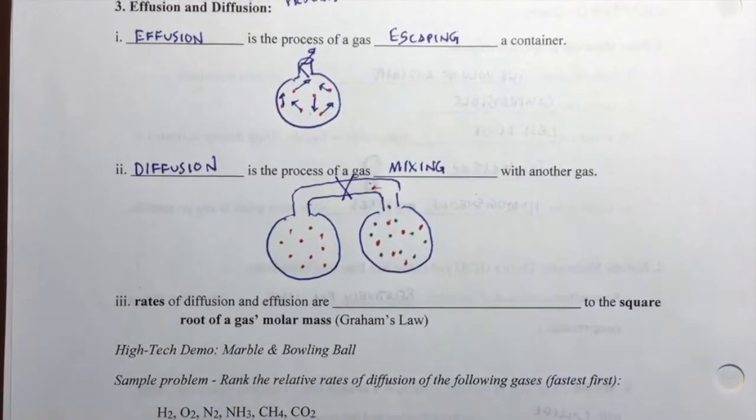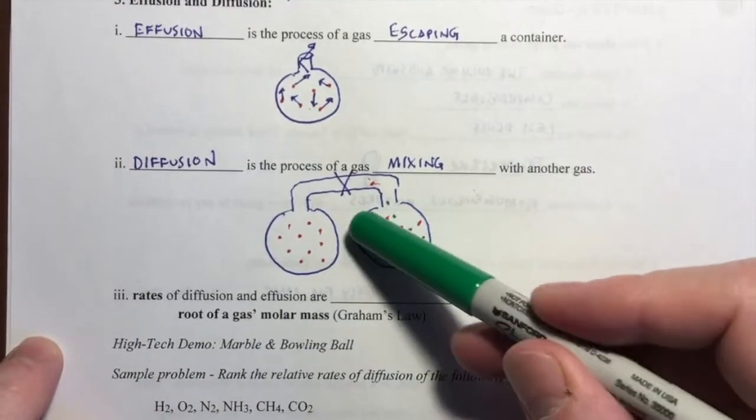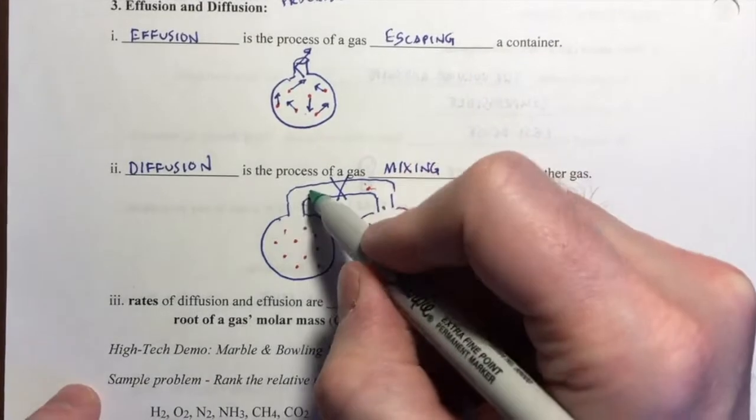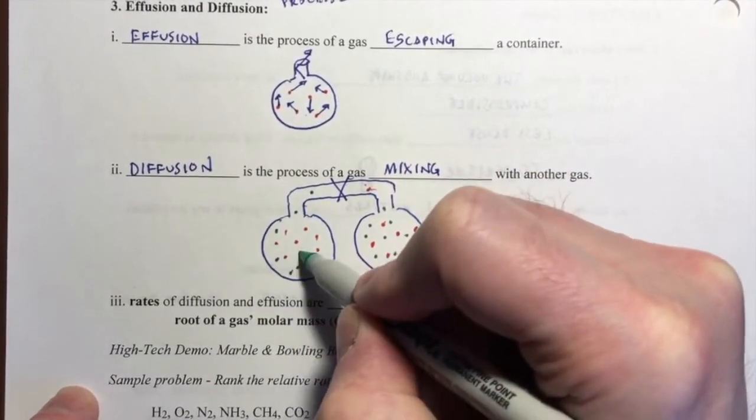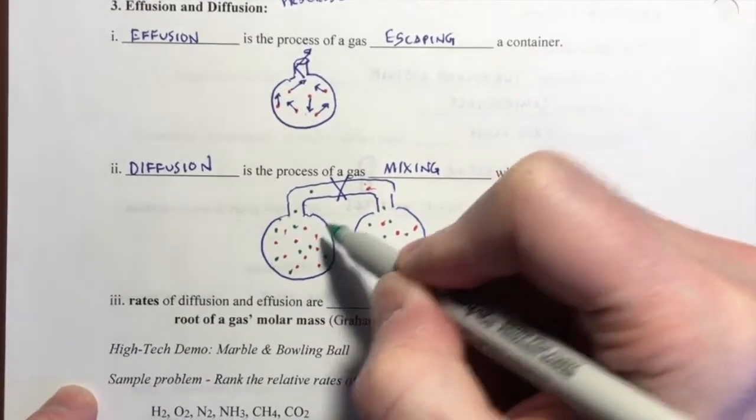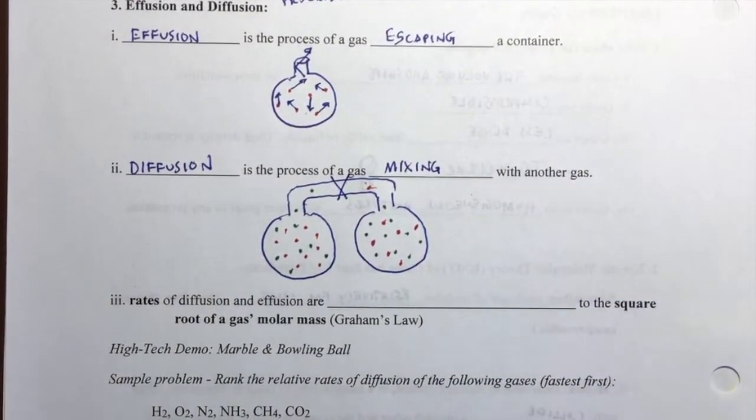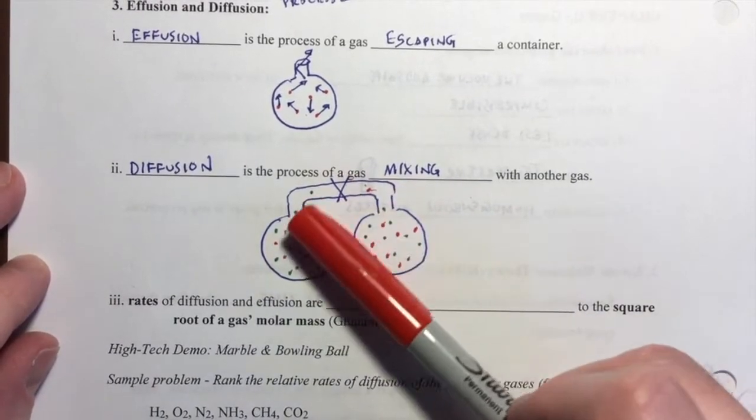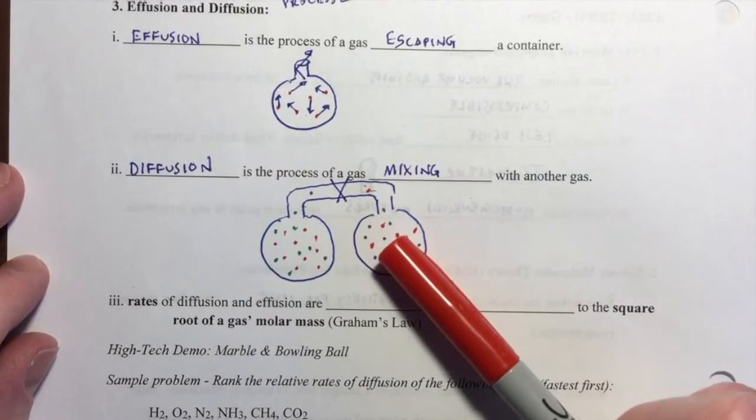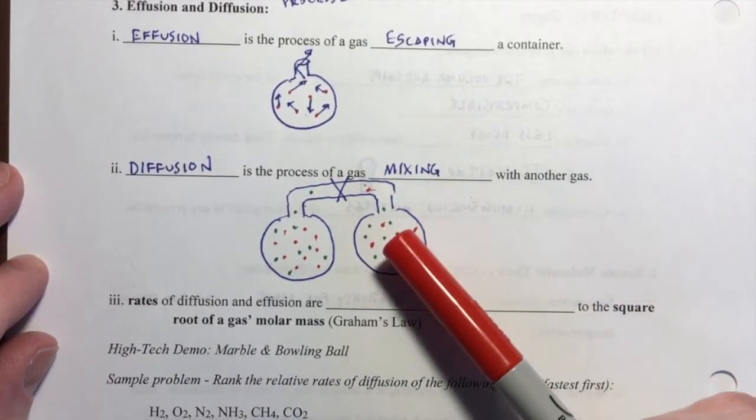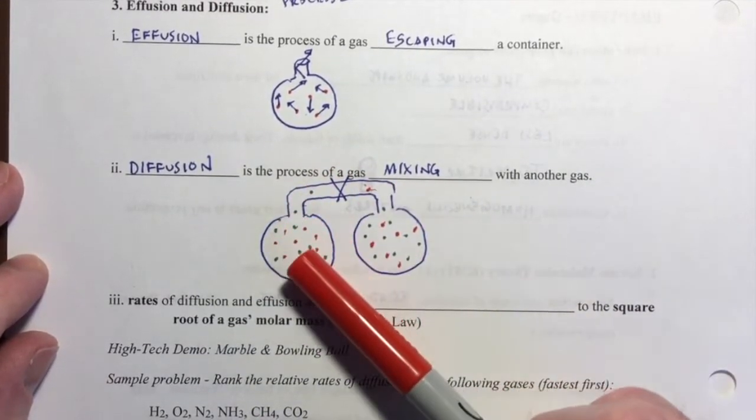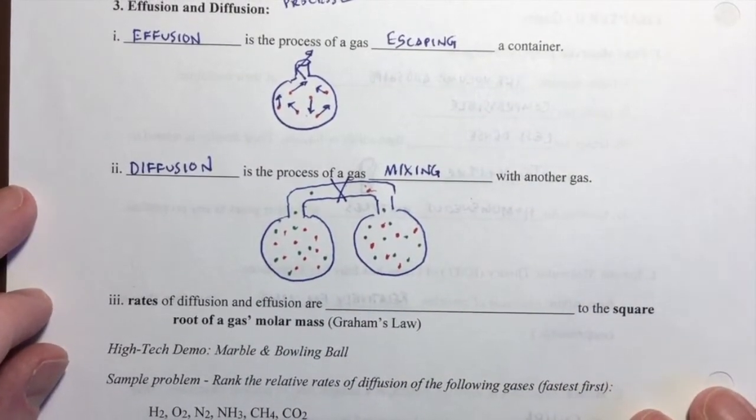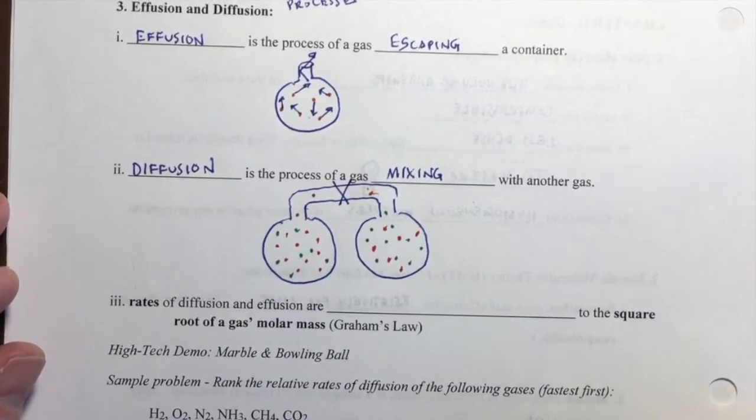Eventually, some of these molecules will bounce their way over in this other area. And the same is going to happen for this gas. It's going to bounce, bounce, bounce. And eventually, some of those gas molecules will find their way over in this area. We see that the two gases have now mixed. The one gas now occupies the whole container, and the other gas now occupies the whole container space. That is the process of diffusion when we allow two gases to mix.